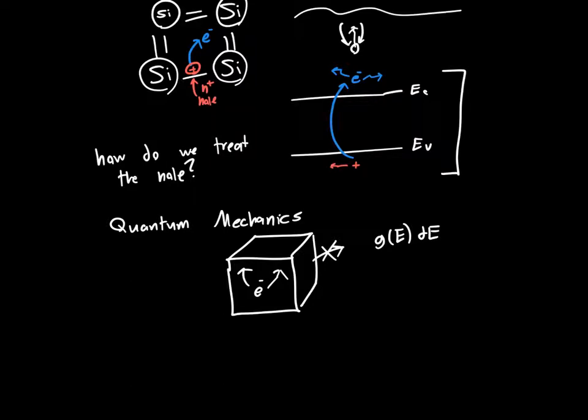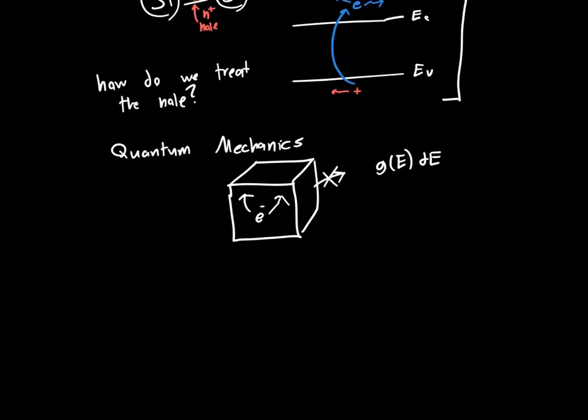And so maybe if we use that model, then we can say something about how the electrons and holes move around in the solid. But this model is going to fail us as well, because we only accounted for the electron inside this box. We said nothing about the hole, and there's nothing in the predictions of the model that say anything about how holes might move, or really what holes might be. So this model is insufficient as well.